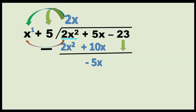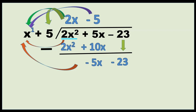The next step is to bring down negative 23. Then divide negative 5x divided by x — so negative 5x divided by x is negative 5. We subtract the exponent: 1 minus 1 is 0, so therefore we have no variable. Then we multiply: negative 5 times x is negative 5x. Negative 5 times positive 5 is negative 25.